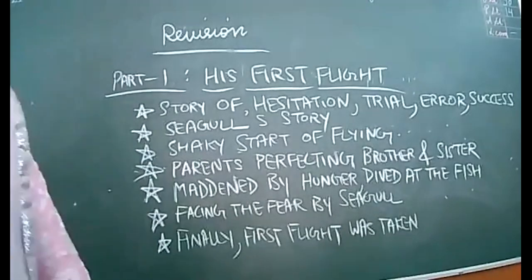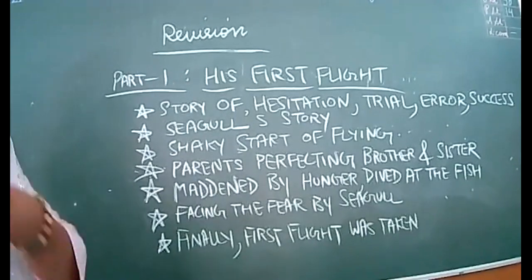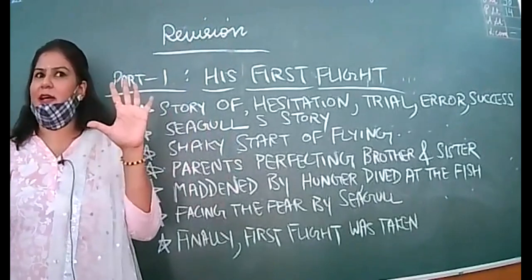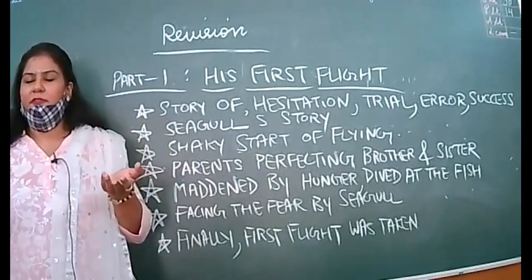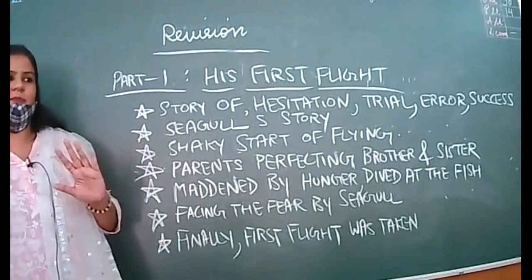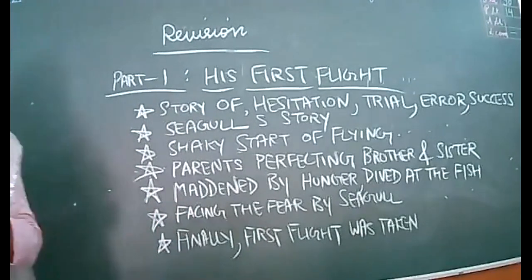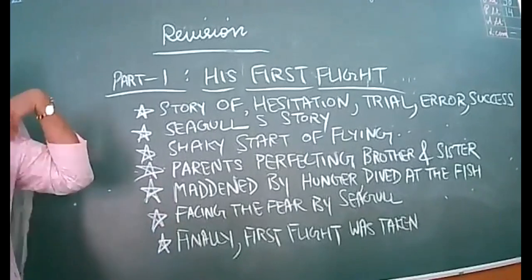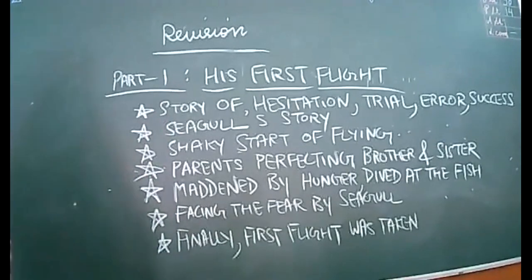The young seagull was sitting alone on the ledge and its two brothers and sisters had already learned the art of flying. Each individual is different — just like all fingers are different though on one hand, similarly your brother and sister, though born to the same parents, are not alike. Your preferences will be different. Everybody has an individual persona — you cannot compare yourself with others. Maybe they were just quick learners, so brother and sister both learned to fly.